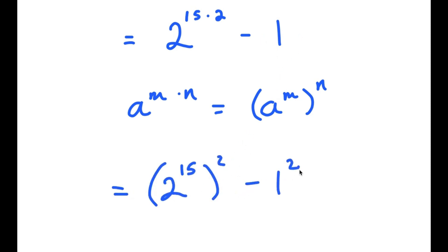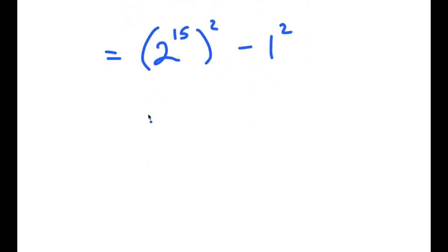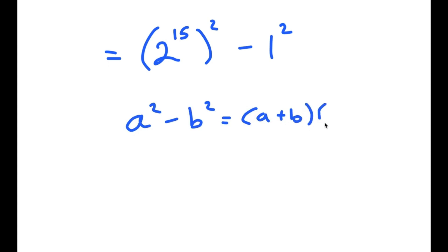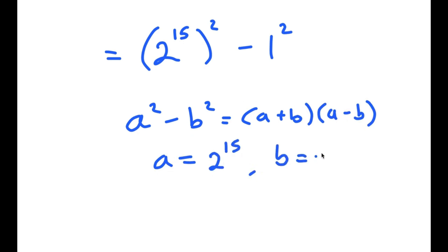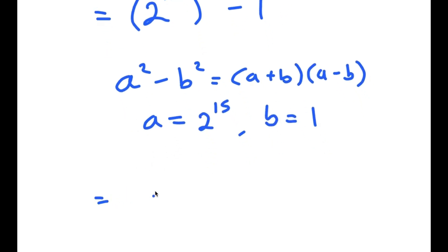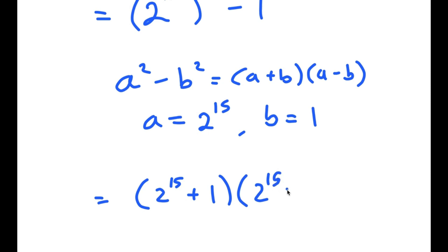And negative 1 is the same thing as negative 1 squared. Now if you have something in the form a squared minus b squared, this is equal to a plus b times a minus b. So in this case a is 2 to the power of 15 and b is 1. So now I have 2 to the power of 15 plus 1, times 2 to the power of 15 minus 1.